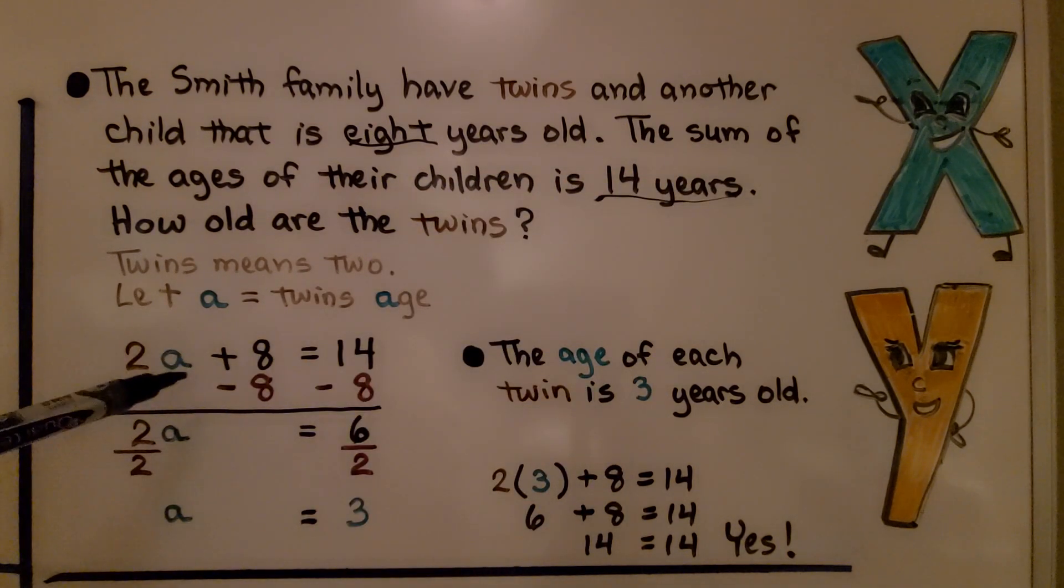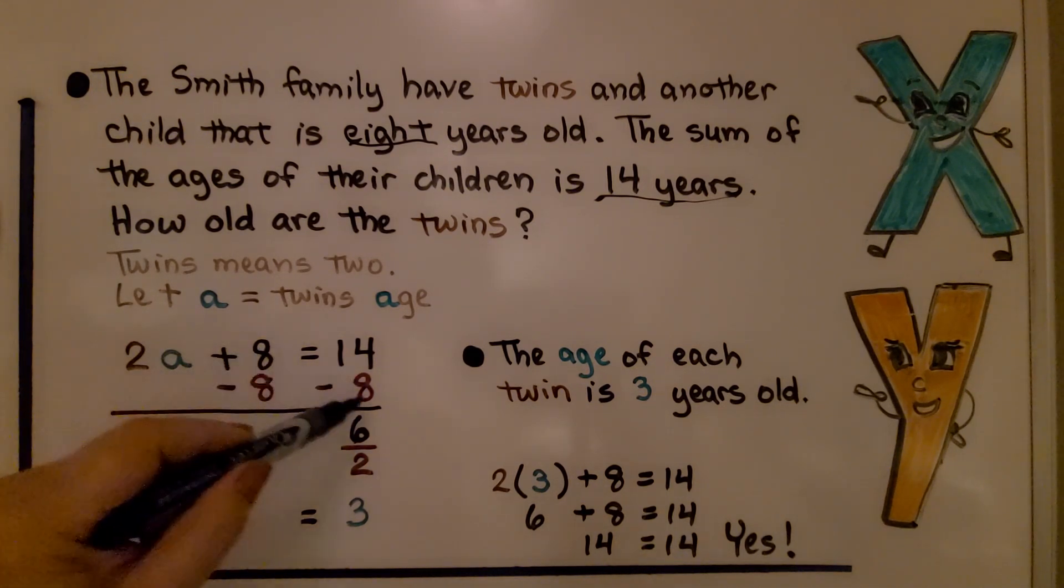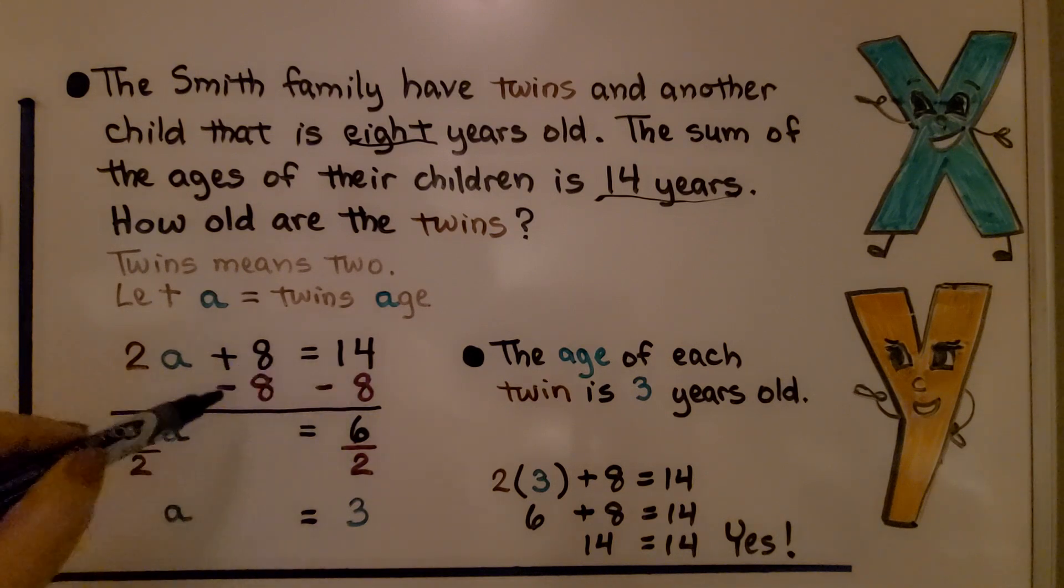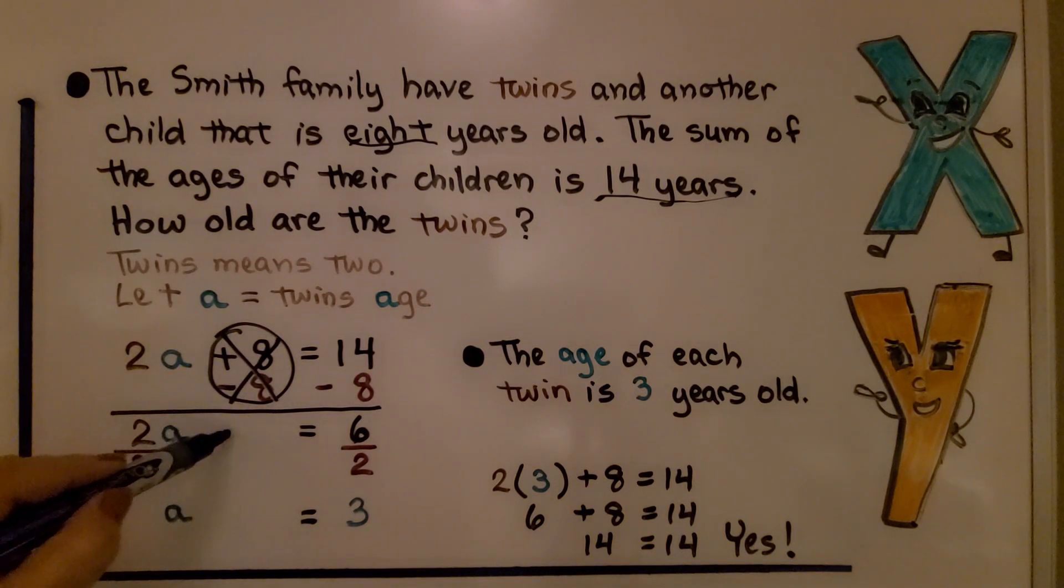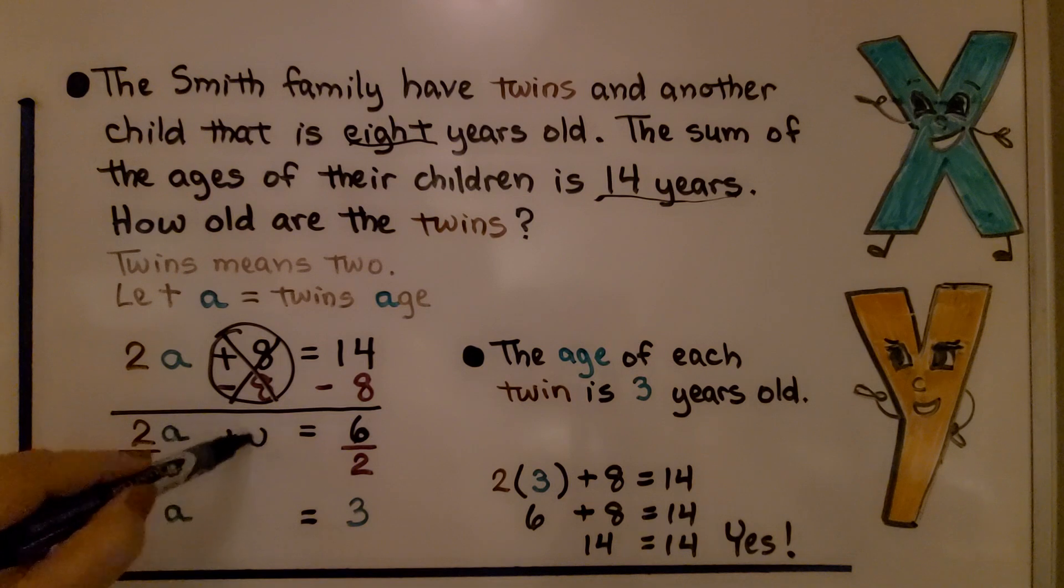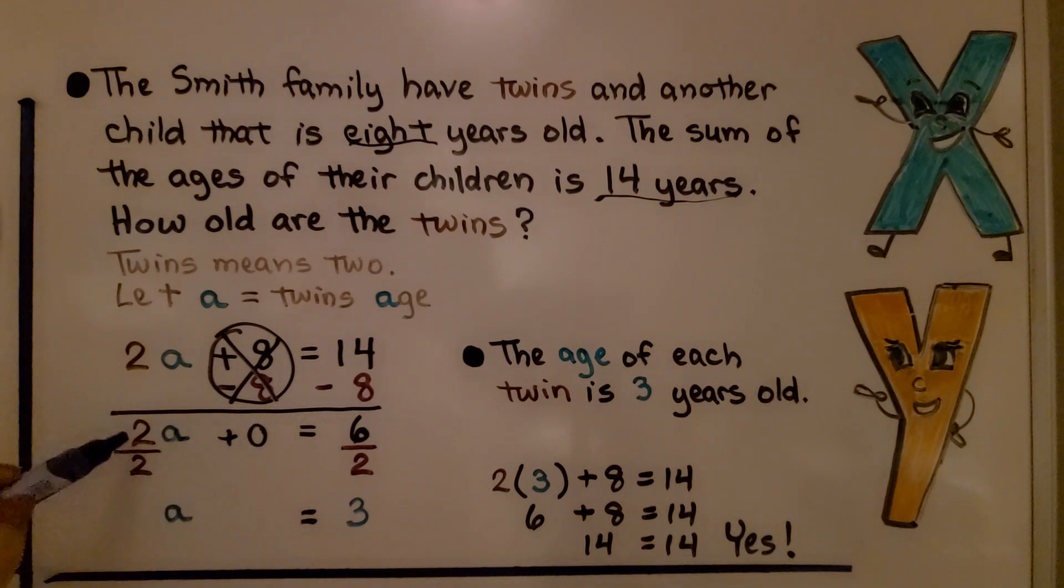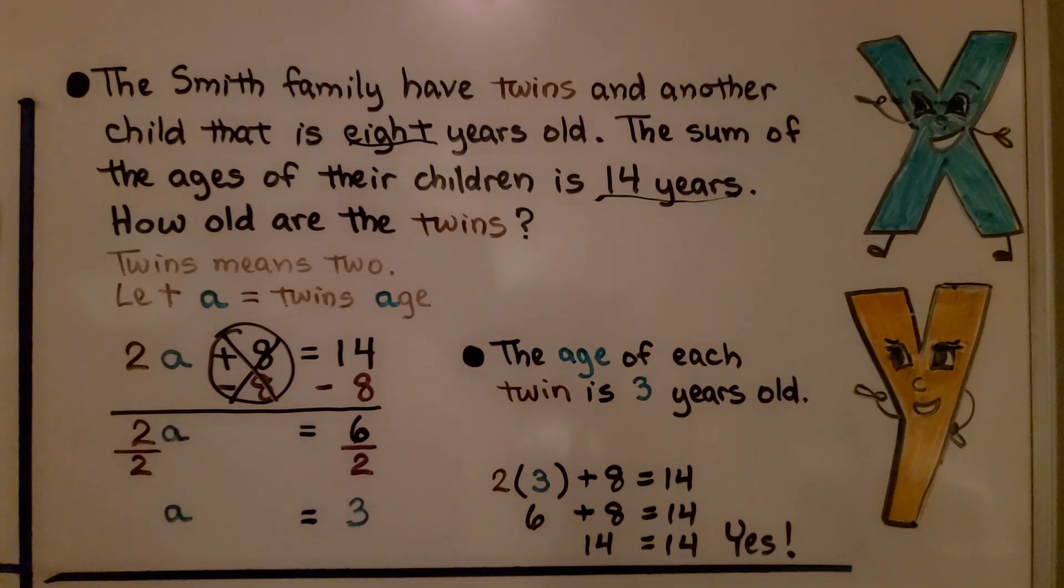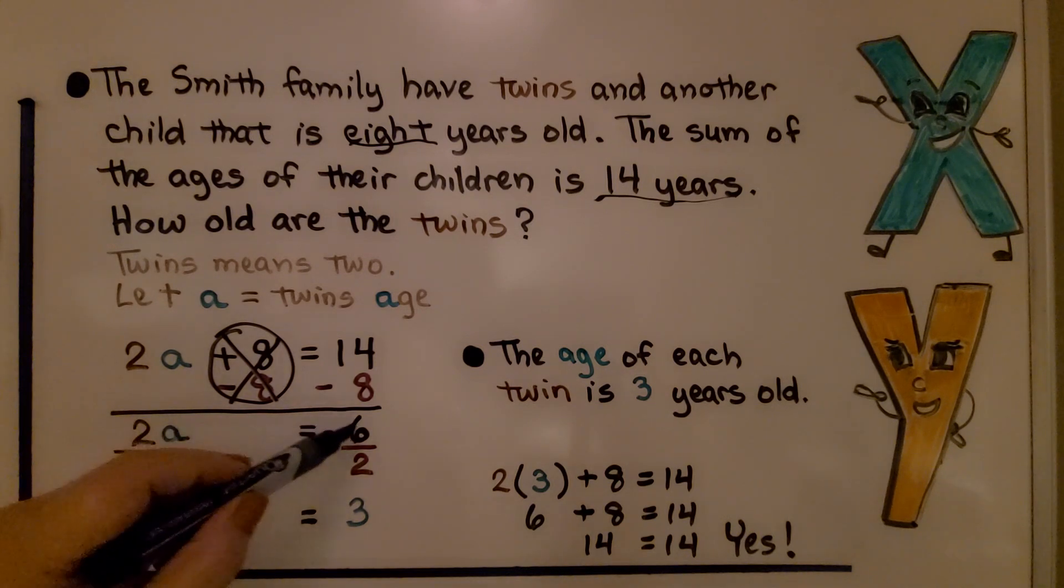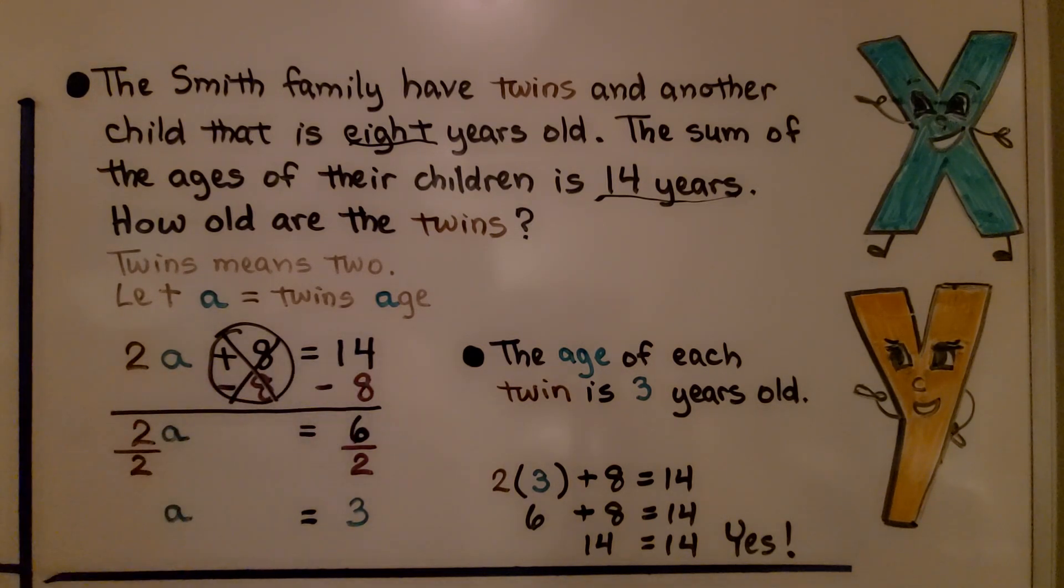We start by doing an inverse operation. We want to isolate A to one side. If we have a plus 8, we do minus 8 to both sides of the equation. That's going to eliminate this plus 8. Plus 8 minus 8 is 0. Technically, we're saying 2A plus 0. But, identity property, 2A is still going to be 2A on this side if we add 0 or we don't. So we don't need to even write it. We've got 2A equals 6 because 14 minus 8 is 6.